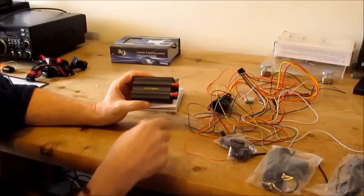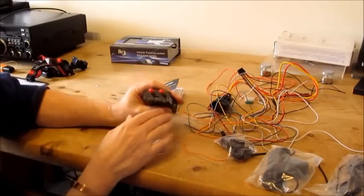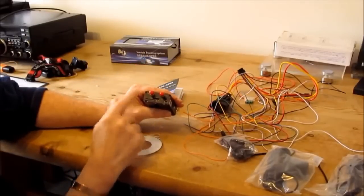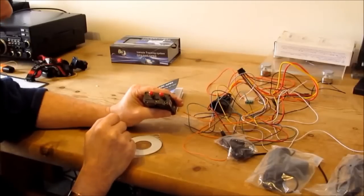This is about the size of a packet of cigarettes, very light, a little aluminum case. Looking at it, from this end you've got two connectors, one for the GPS antenna, one for the mobile phone antenna.